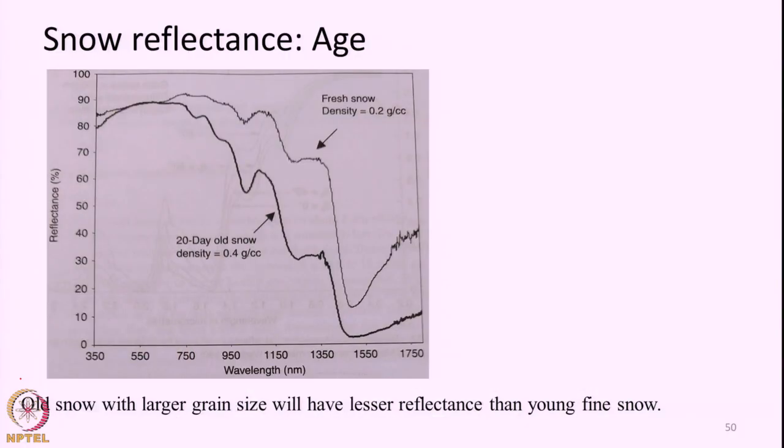The next feature we are going to see is snow age. We have already seen that as the snow ages, the grain size tends to increase — more snow may fall on it, it may become densely packed, or the grain size may increase. When grain size increases, the reflectance will decrease. So in general, as the snow ages the reflectance decreases primarily because of the increase in grain size.